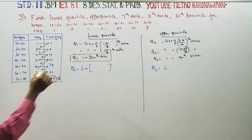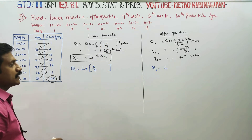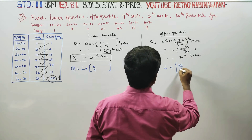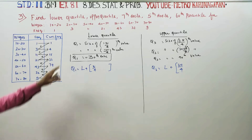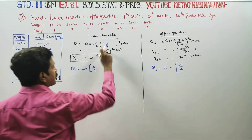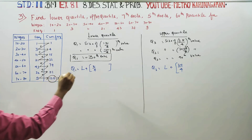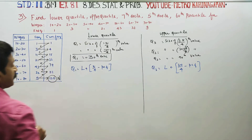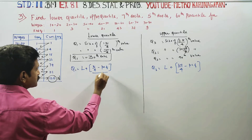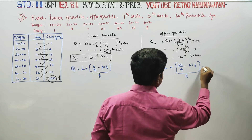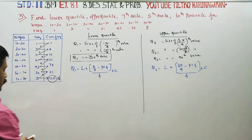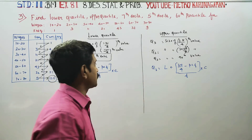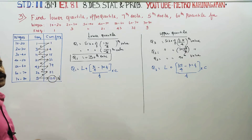For the first quartile Q1, we use N by 4. For the third quartile Q3, we use 3N by 4. The formula is: L plus (N/4 or 3N/4 minus previous cumulative frequency PCF), divided by frequency F, into class interval C. This applies to both lower quartile Q1 and upper quartile Q3.